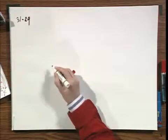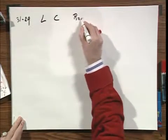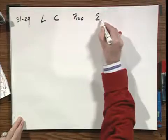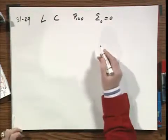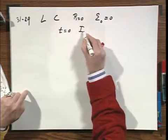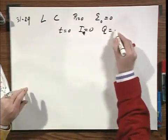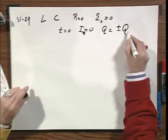Problem 31-29: we have an L, we have a C, R is zero, epsilon zero is zero, there is no driving voltage. At T equals zero, I equals zero, and Q on the capacitor is either plus or minus Q zero.